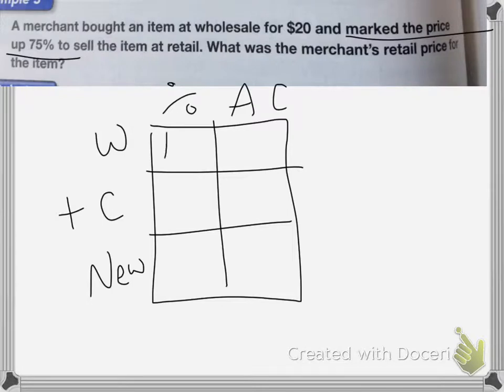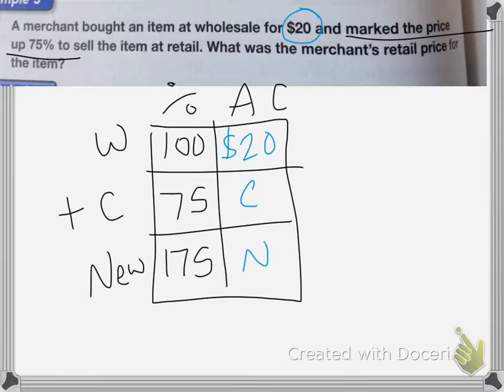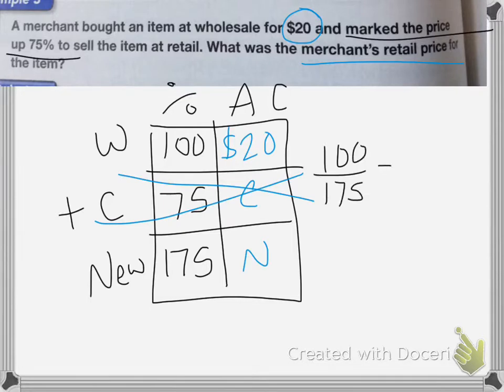So my wholesale price is going to be 100%. He's marking it up 75%, so my new price is 175%. The original price is $20. So the actual count is going to be $20 for the wholesale price, and then he has his change and his new amount. It asks for the merchant's retail price, so I don't need to know what the change is. Now I can create my proportion. I end up with 100 over 175 equals 20 over N.